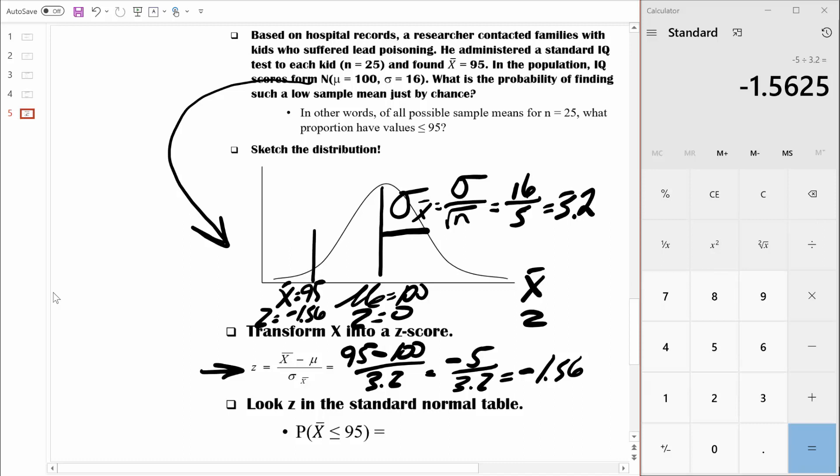We need to figure out what's the probability of finding a sample mean of 95 or lower. In other words, what's the probability of finding our data or data more extreme just by chance? Well, you know what we need to do. We're going to need to look up 1.56 in the Z table and find the area in the tail. Let's do that.